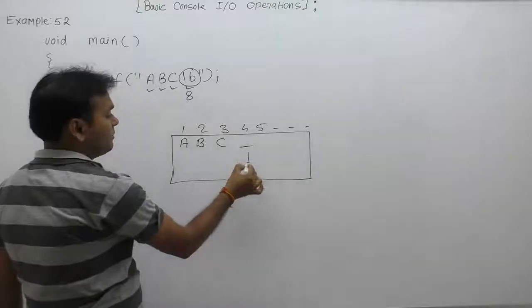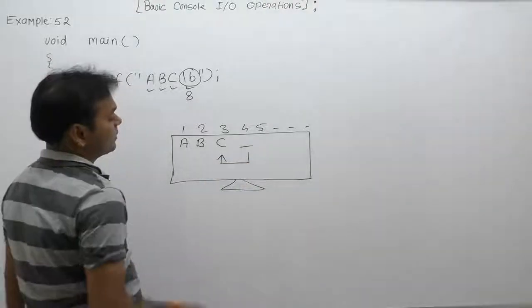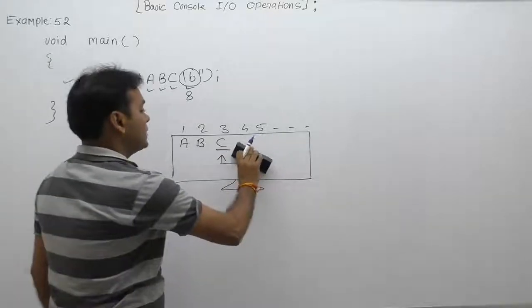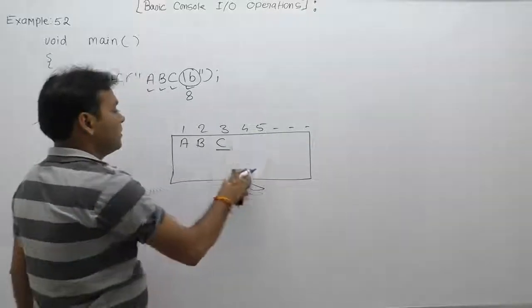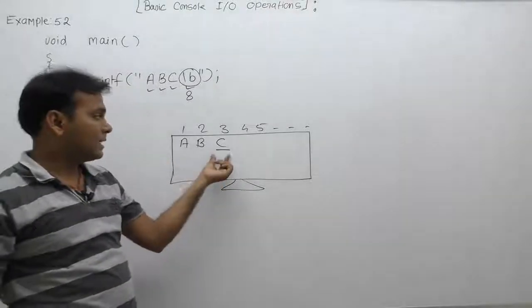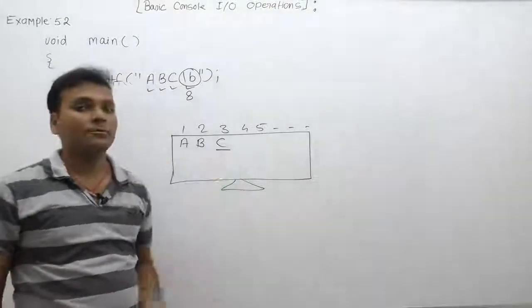Whenever you are seeing output of that program, output becomes like that: 'a', 'b', 'c'. Inside 'c', cursor is available. This is the current position of the cursor after displaying the given message.